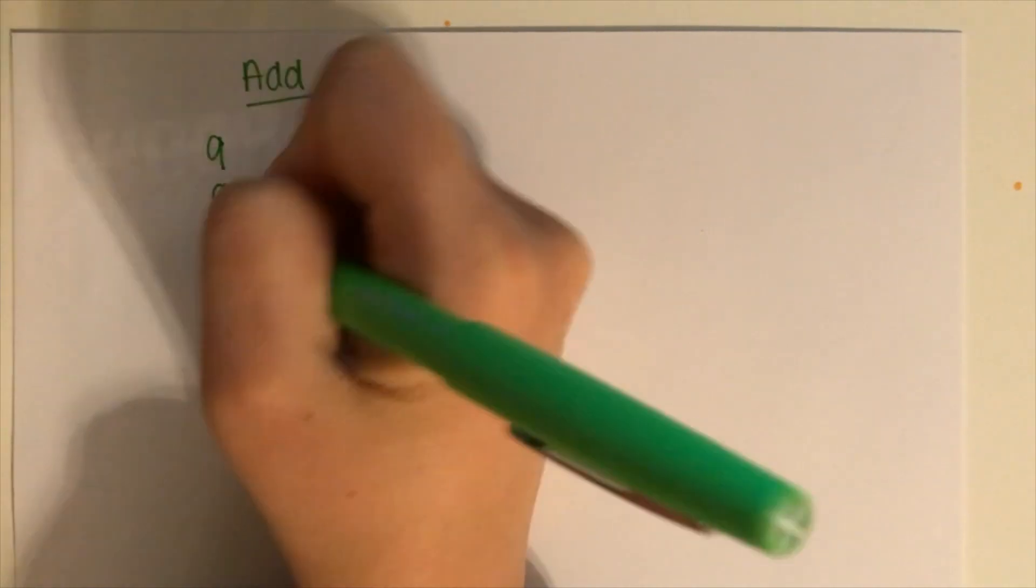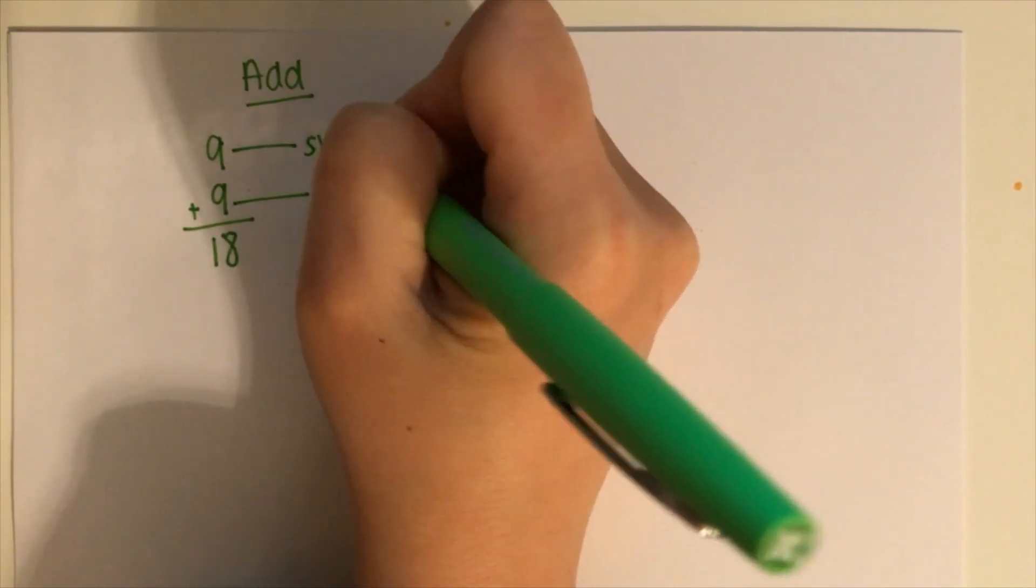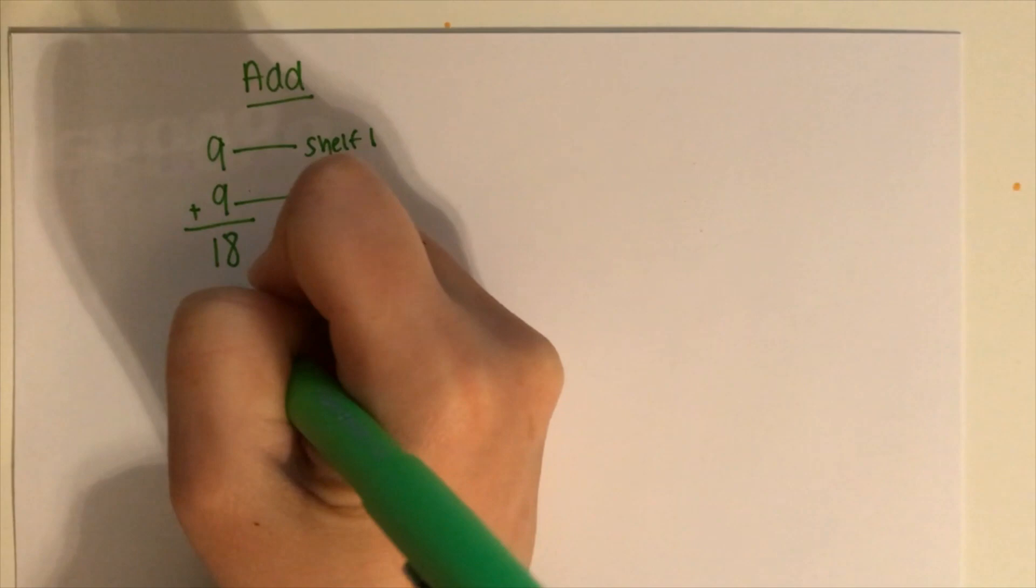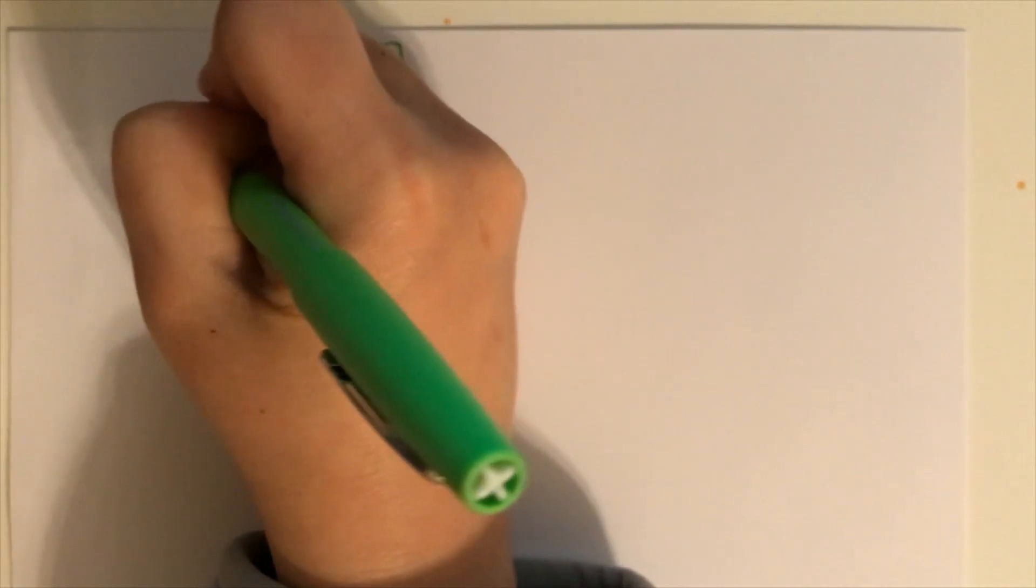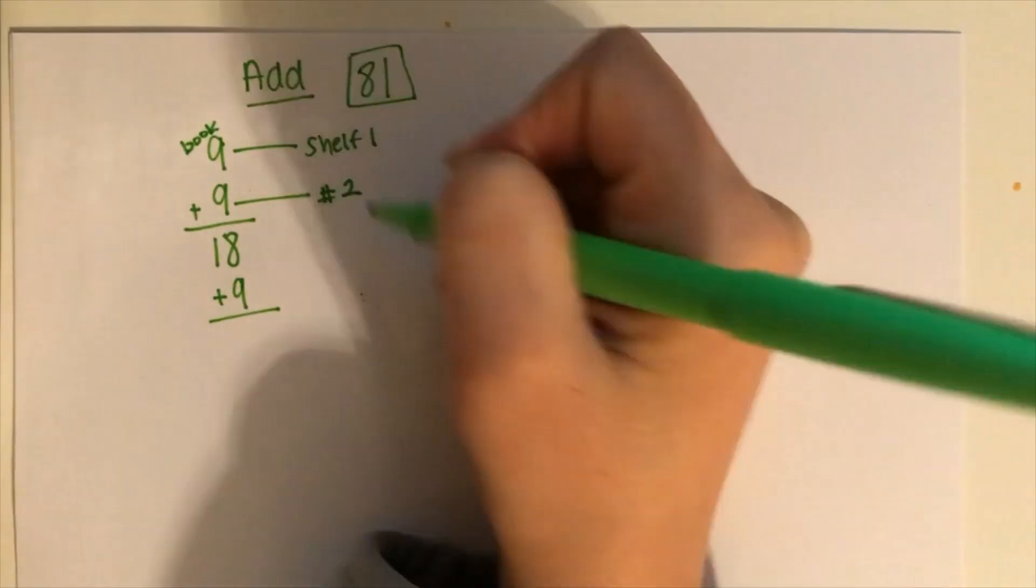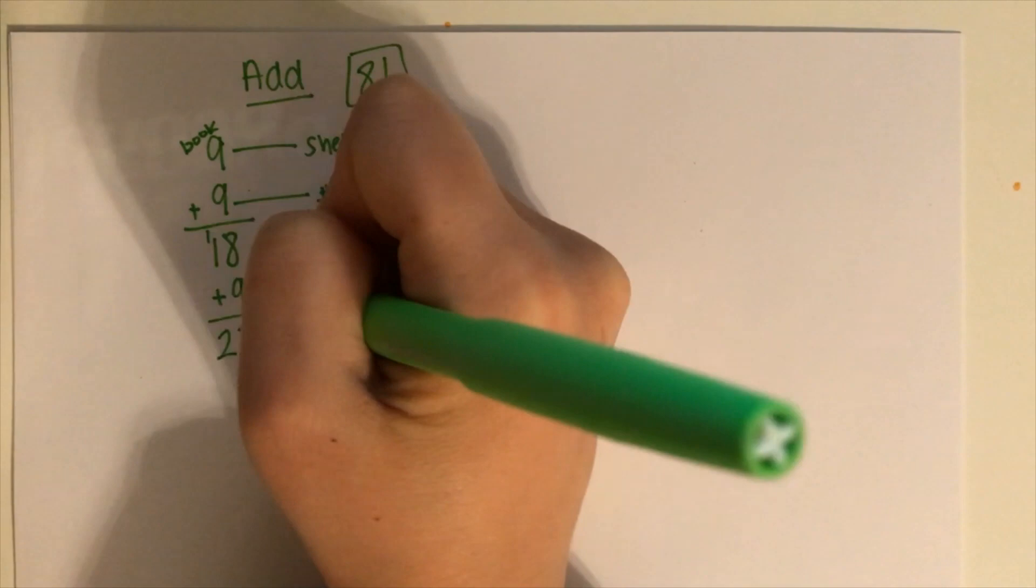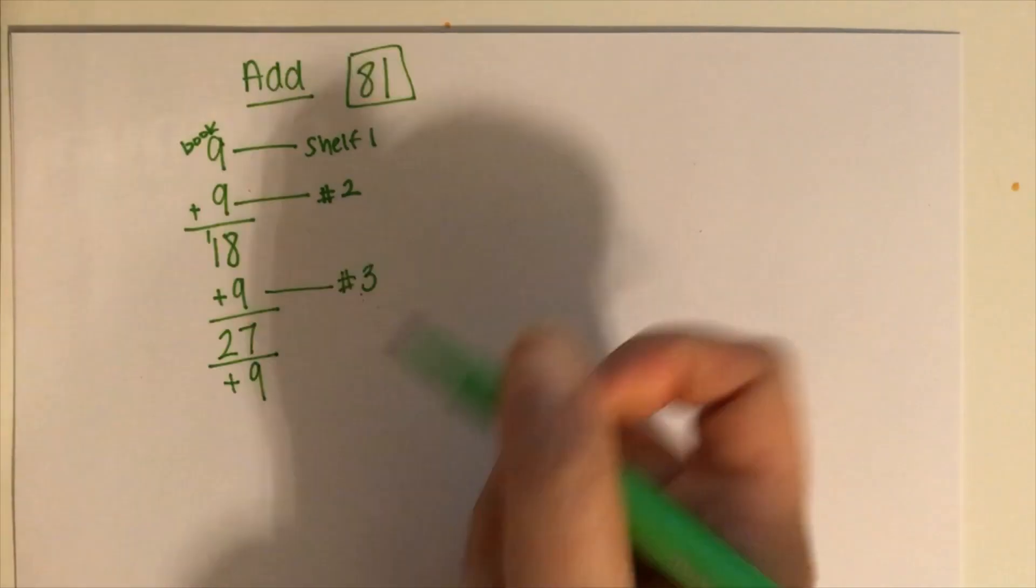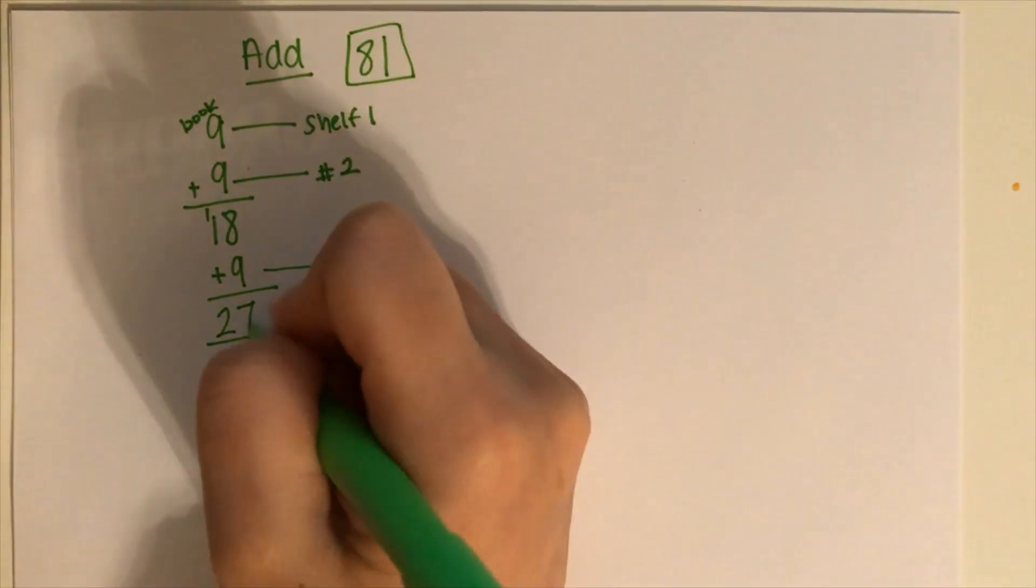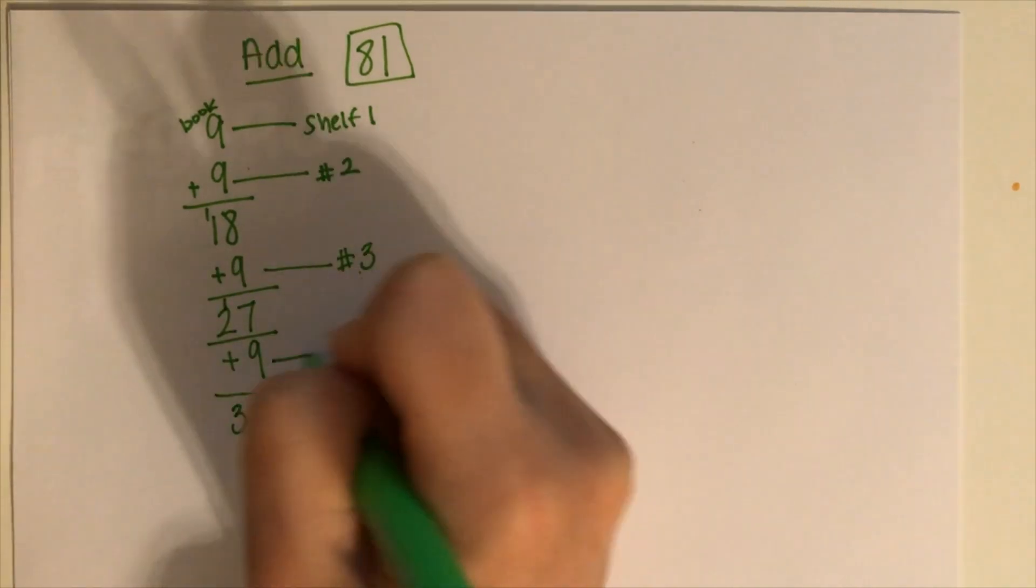Second thing we can do is add. So that physically means we're just going to take nines and we're going to add them together. I know that nine plus nine is 18. So every time there's a nine, that's a shelf. So this is shelf one. This is number two. You're going to add another nine. And our final goal is to get to 81. These are your books. So this is nine books. And then nine more books is 18. Nine more books is 27. Then we're going to add nine more books. Because again, we're still at 27. We're trying to get to 81. This is going to be a long one. So we're going to add nine more. And you get 36. And this is shelf number four.